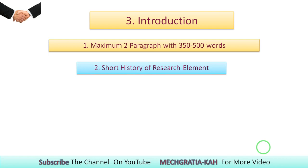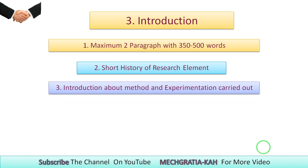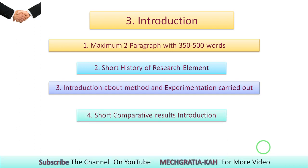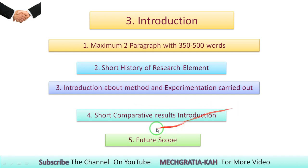In the introduction, you should include a short history of the research element. You should mention the method and the experimentation carried out, include a short comparative result introduction, and define what your future scope is. It should be completed in between 350 to 500 words.